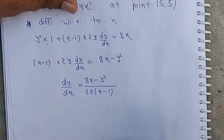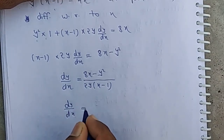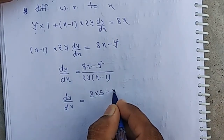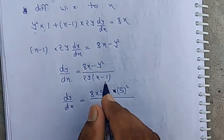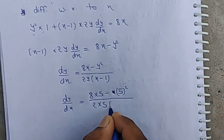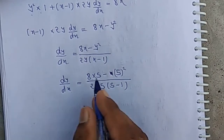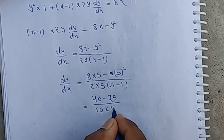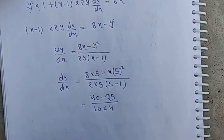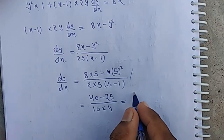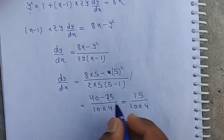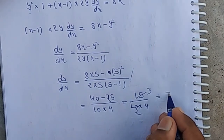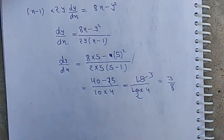Now substituting x = 5 and y = 5: dy/dx = (8×5 − 5²) / (2×5×(5−1)) = (40 − 25) / (10×4) = 15/40 = 3/8. So the slope of the tangent at (5, 5) is 3/8.